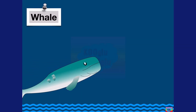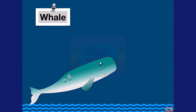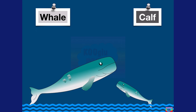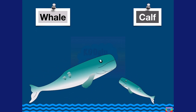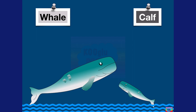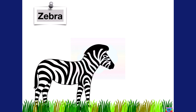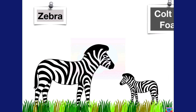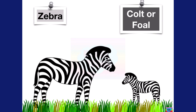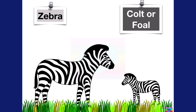Here we got a whale, and a baby whale is called a calf. Here we got a zebra, and a baby zebra is called a colt or a foal.